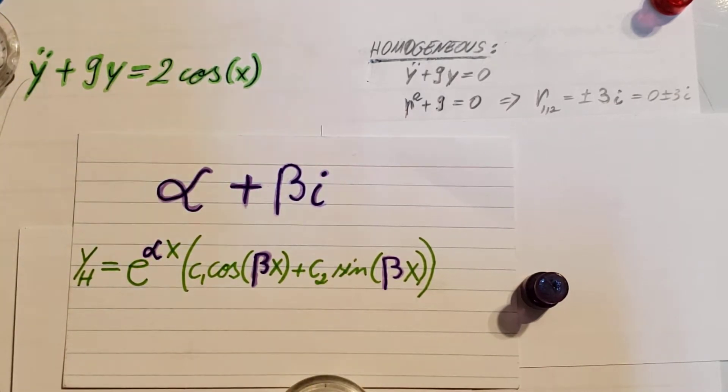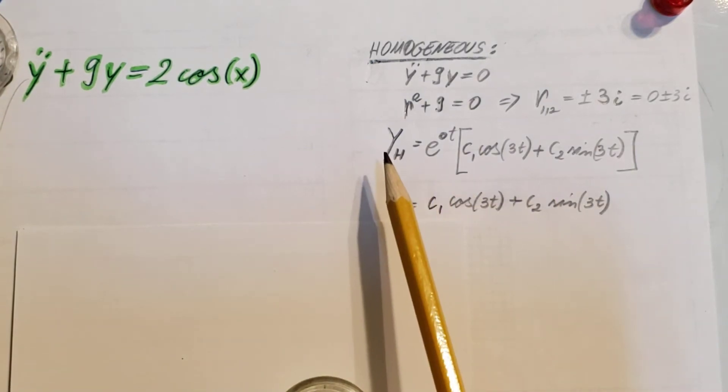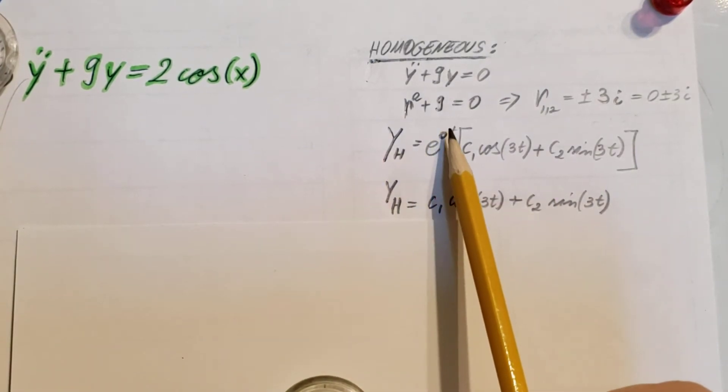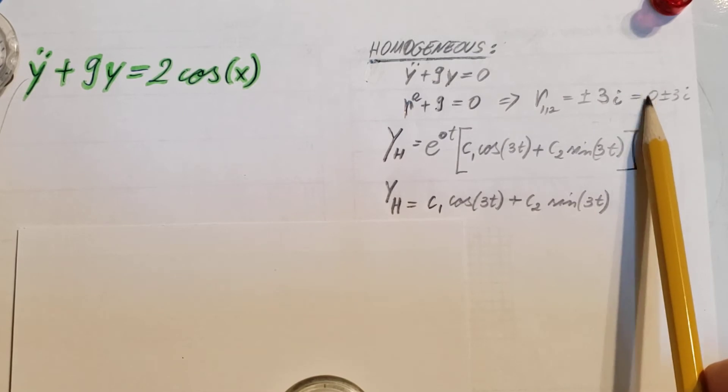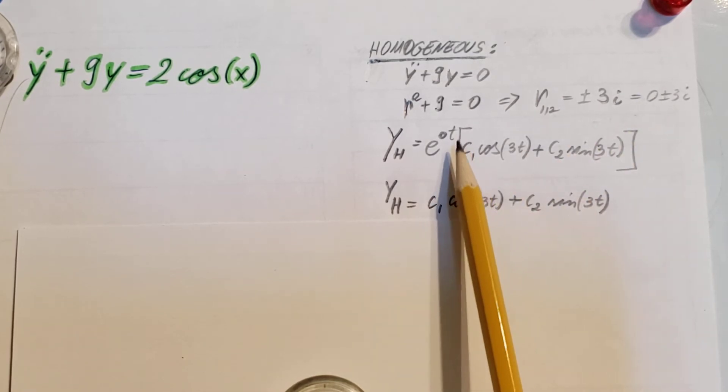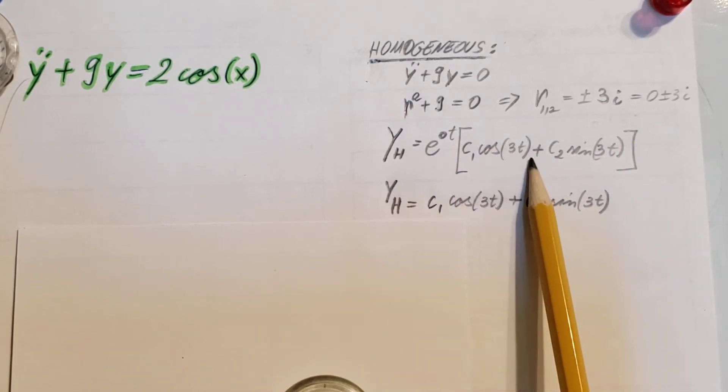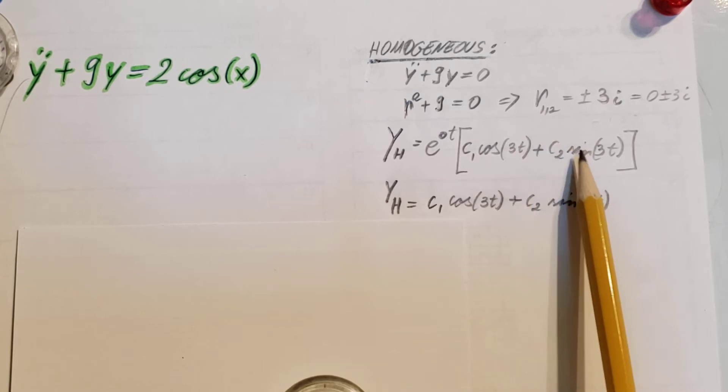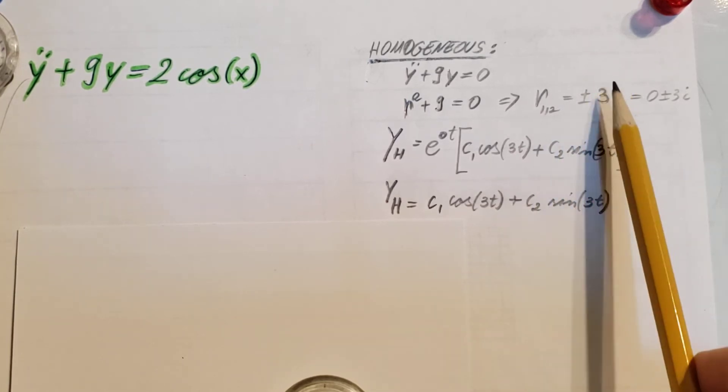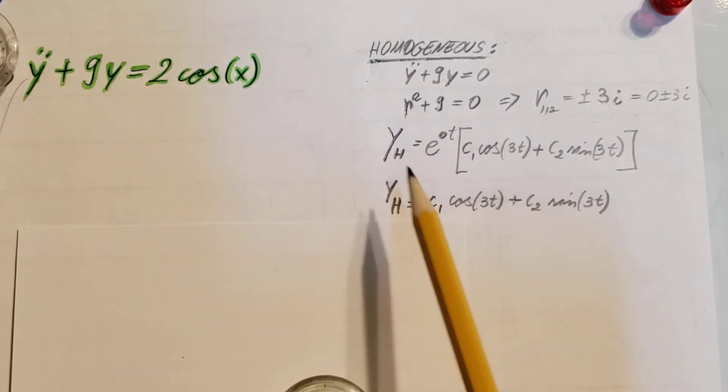That's what we can see here: e to the zero t, since zero is my real part, and c1 cosine 3t plus c2 sine 3t. The three because from here. Simplify it, and there's a better version of it here.